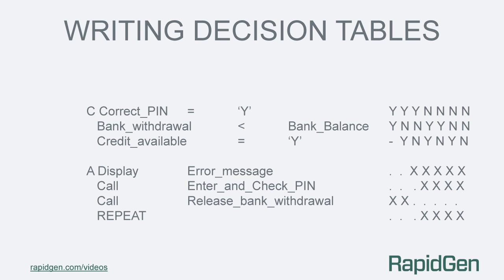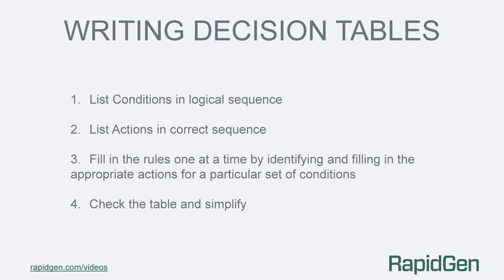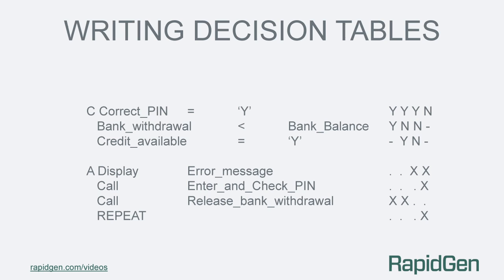How do we know this table is complete? That leads us to our next instruction in writing decision tables: check the table and then simplify it. As you will have seen in the simplifying and completeness check videos, the table is complete and in our example the last four rules of the table have been simplified to one rule. If you have not seen those videos please use the link below.